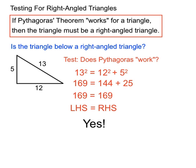So we'd say yes, in answer to the question, is the triangle below a right angled triangle? Yes, because Pythagoras' theorem worked for those numbers on that triangle.